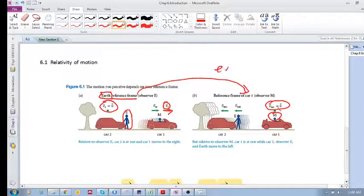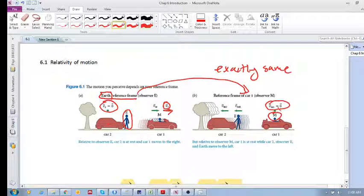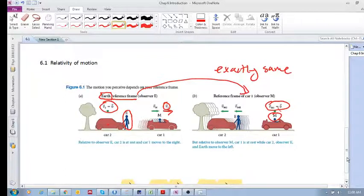So in both these cases we have exactly the same situation, but we are measuring motion from two different reference frames. In this reference frame this car has a zero velocity and this car has a positive velocity to the right. If we switch reference frames so that you're in the car, if you look back you will see that this car is moving away from you.